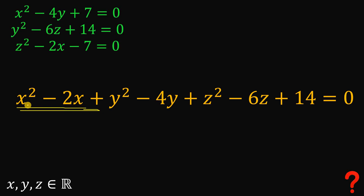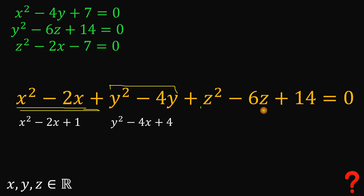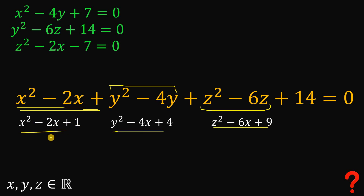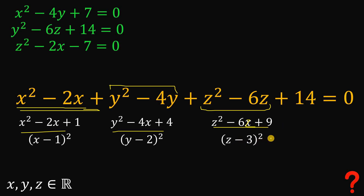If we add 1 to the expression x squared minus 2x, add 4 to the expression y squared minus 4y, and add 9 to the expression z squared minus 6z, those results can each be factored nicely: x squared minus 2x plus 1 factors as (x minus 1) squared; y squared minus 4y plus 4 factors as (y minus 2) squared; and z squared minus 6z plus 9 factors as (z minus 3) squared.